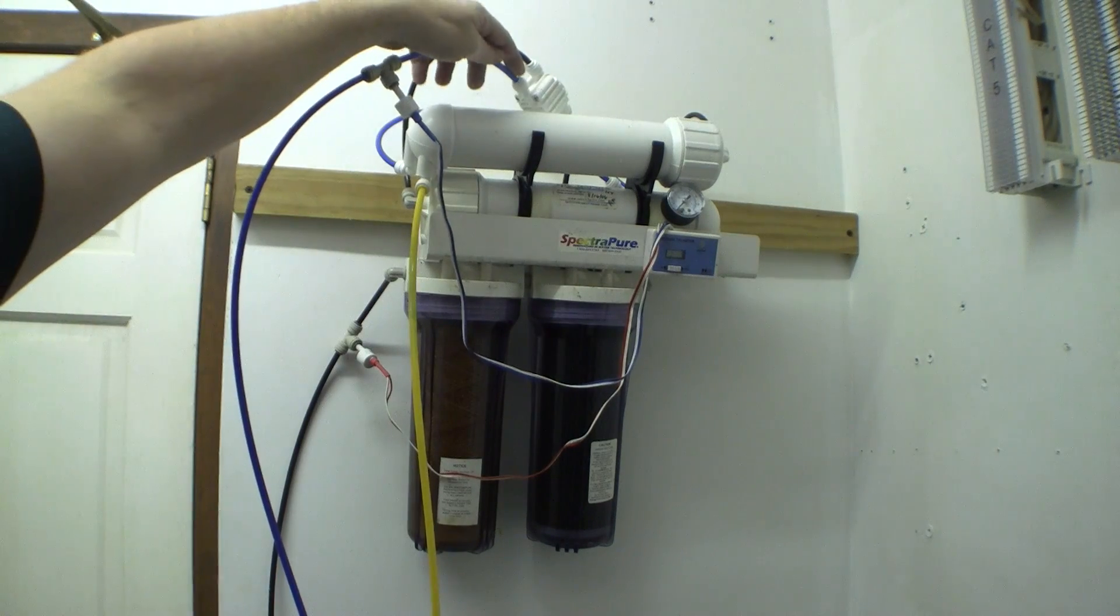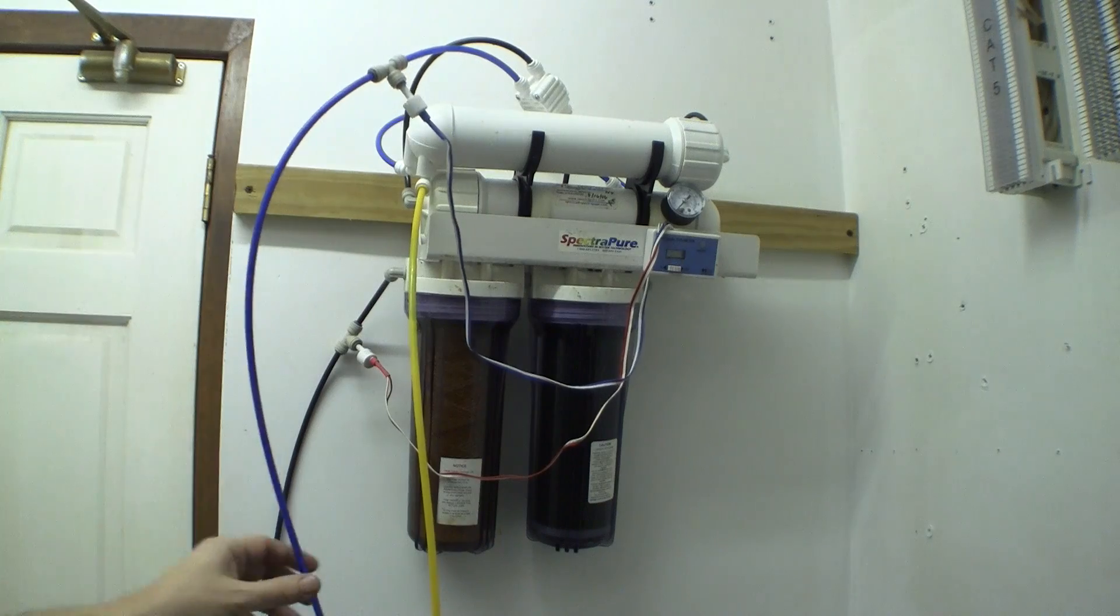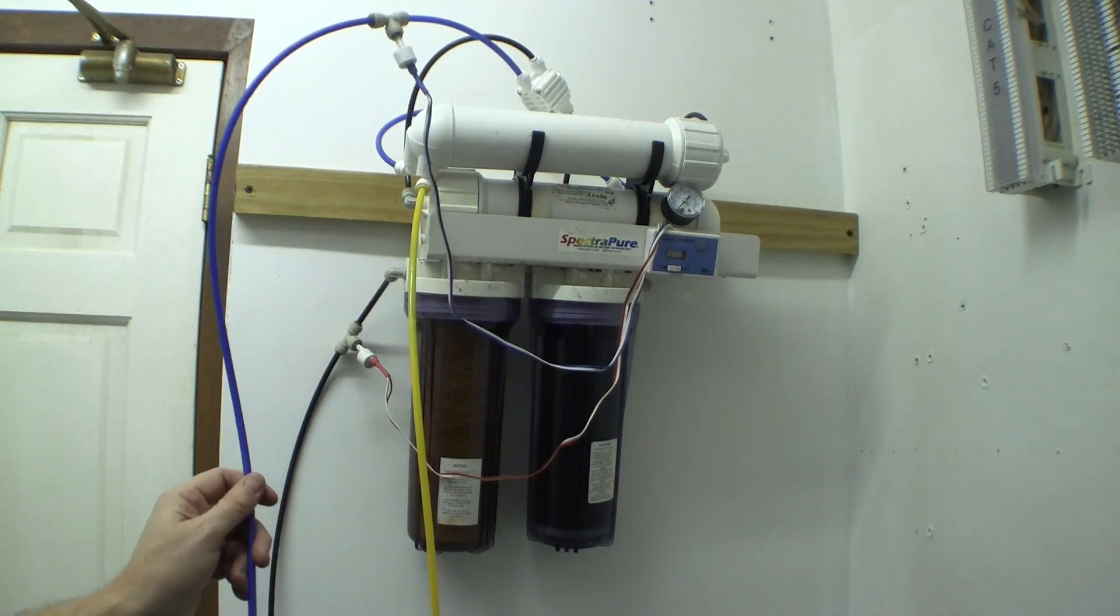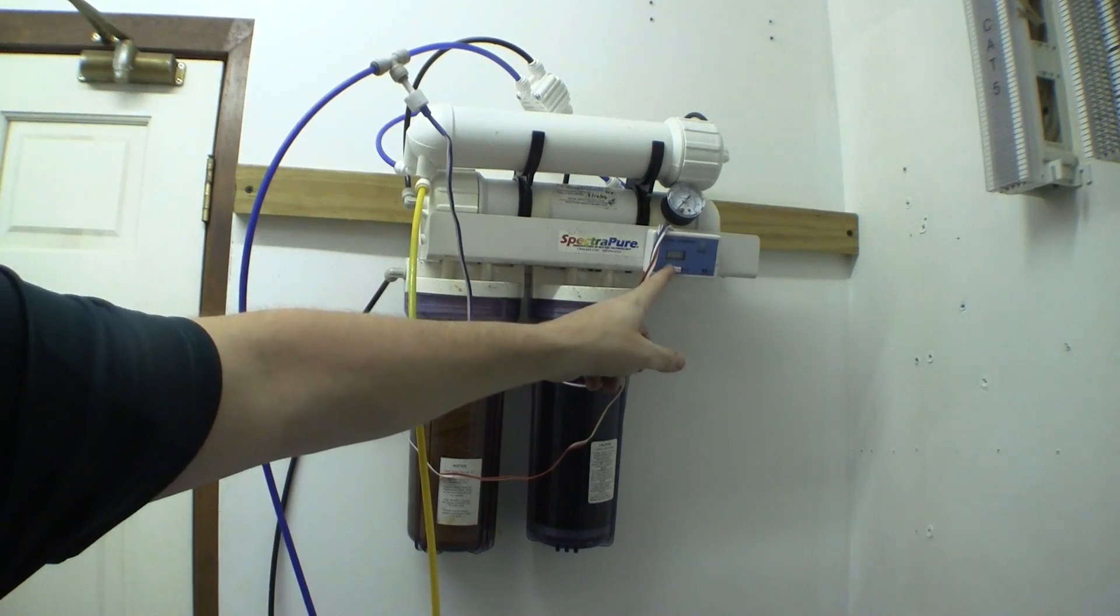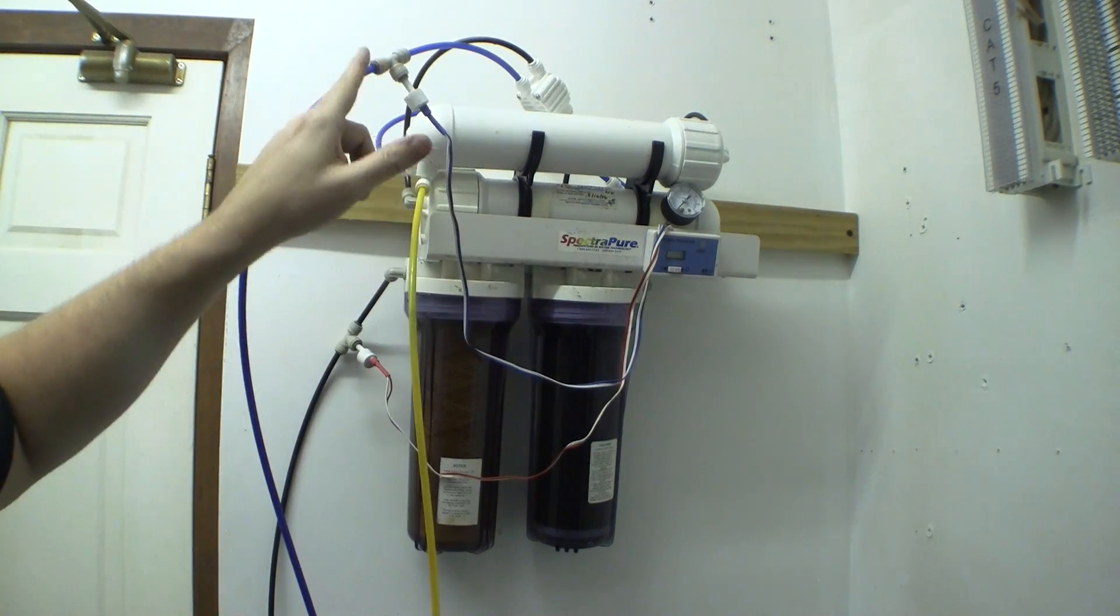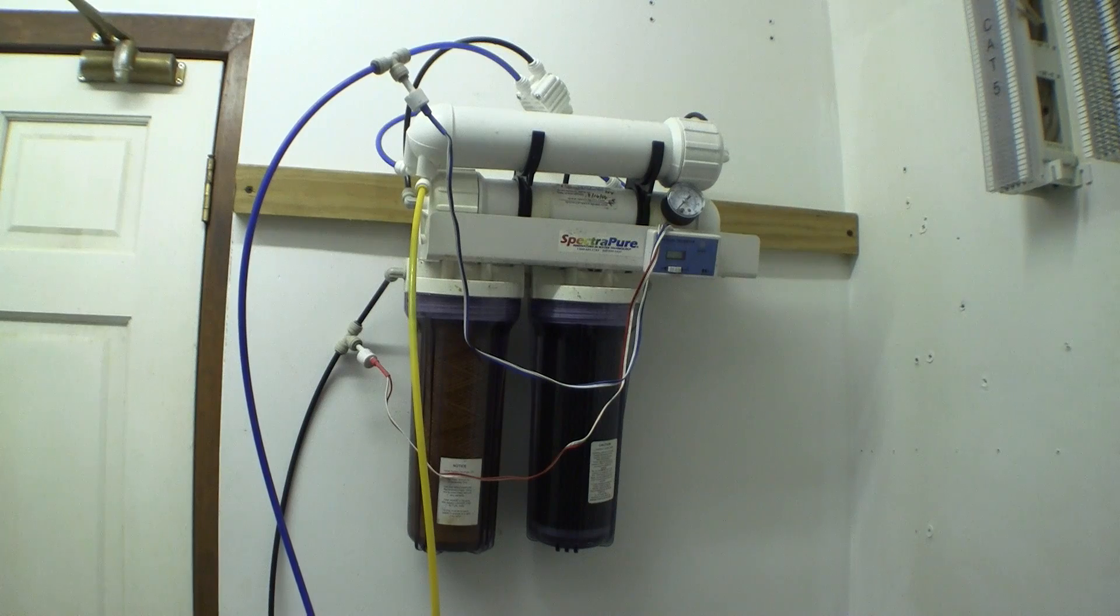Then the Reverse Osmosis water exits from here and goes to the reservoirs where I store the water. But here's another meter and I can flip this little switch and turn the button on and that will tell me what the TDS of the water coming out of the RO system is.